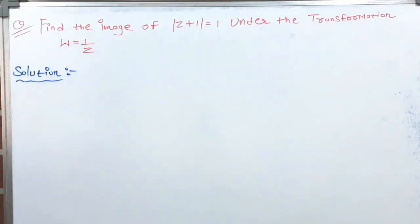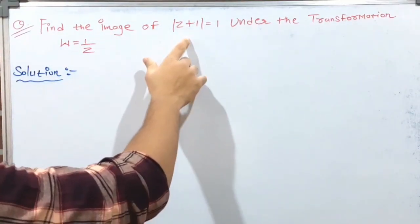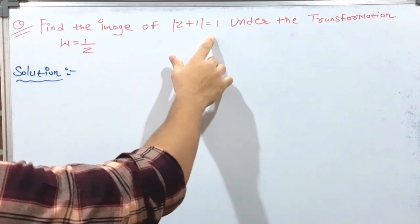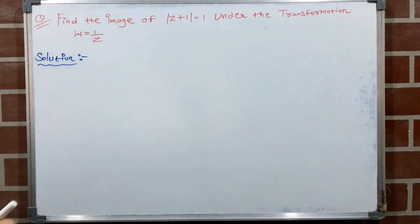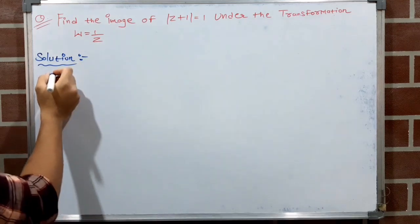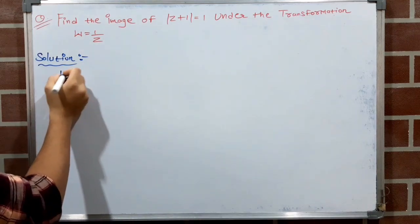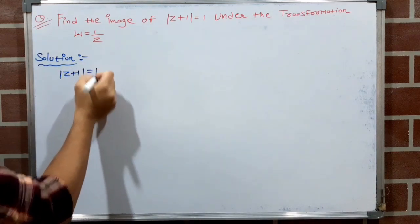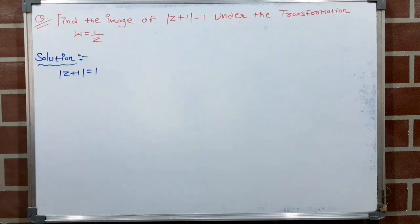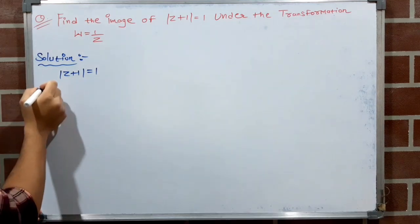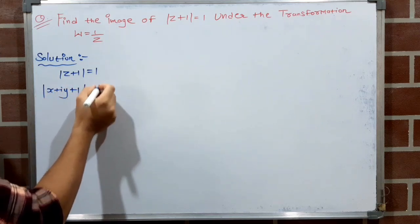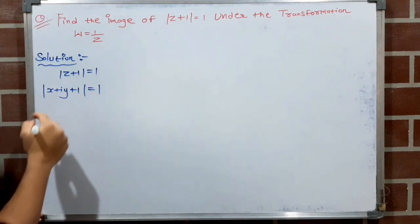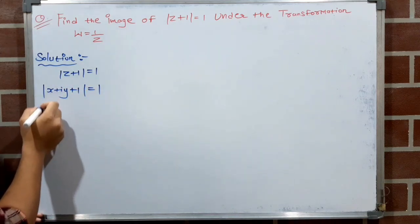The first numerical is: find the image of |z+1|=1 under the transformation w=1/z. So here |z+1|=1 is given, which is the equation of a circle. We write z as x+iy, so |x+iy+1|=1, taking the real part on one side: |(x+1)+iy|=1.